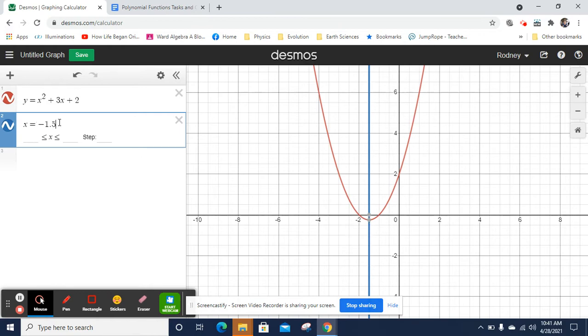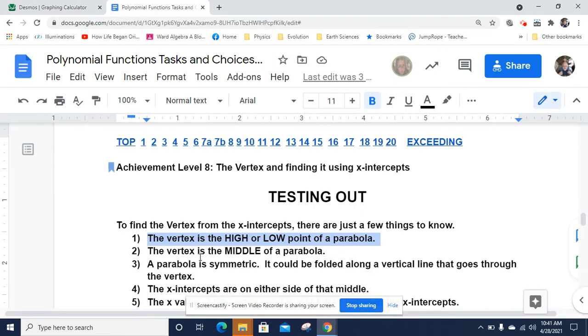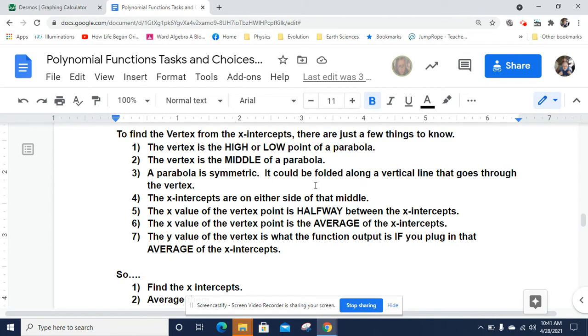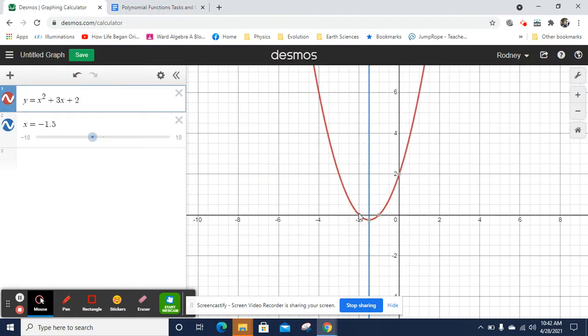It has the x value of the vertex. So now that x value happens to be in the middle, halfway between those two x-intercepts. So if you look at the two x-intercepts, we've got an x-intercept at negative 2 here and 1 at negative 1. If we add negative 2 and negative 1, we get negative 3. We divide that by 2, we get the average of negative 2 and negative 1. And that is negative 1.5. And then we can take that x value, and we can plug it right into this equation here.